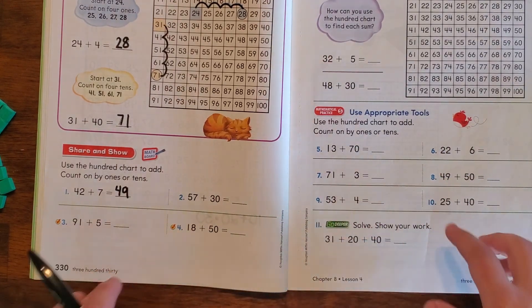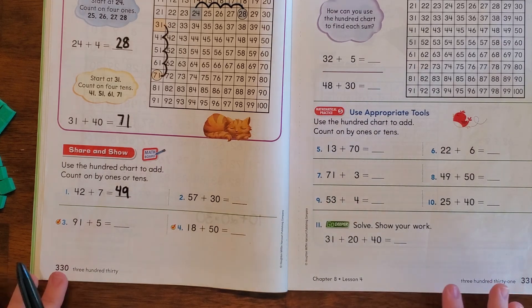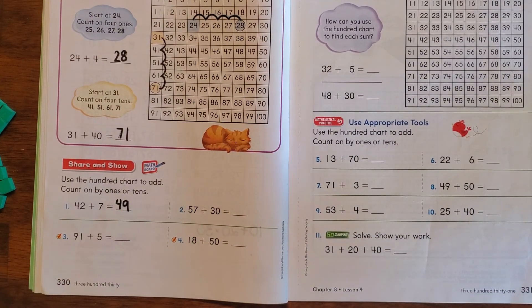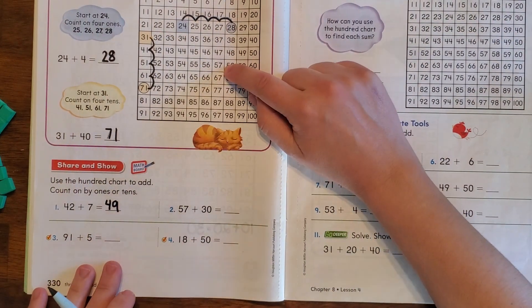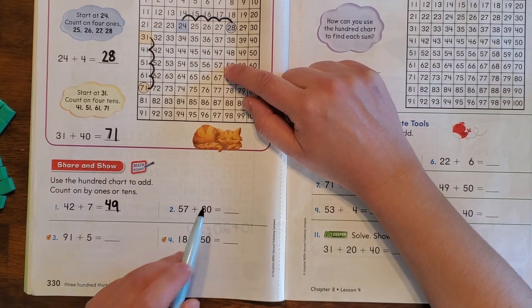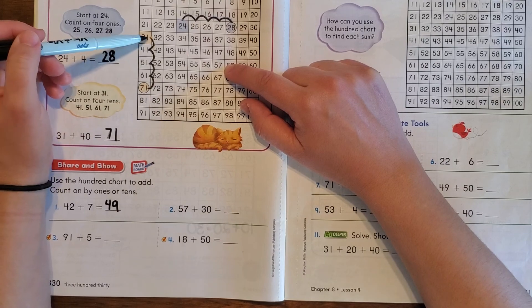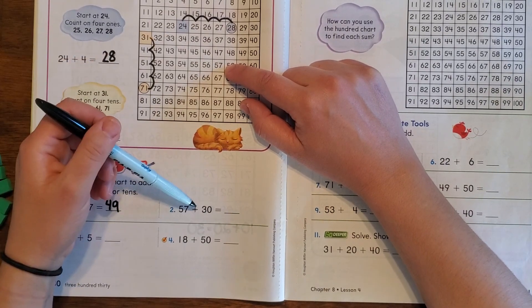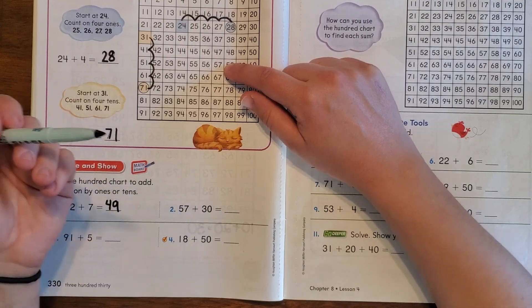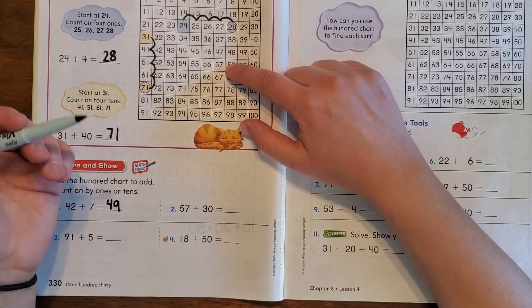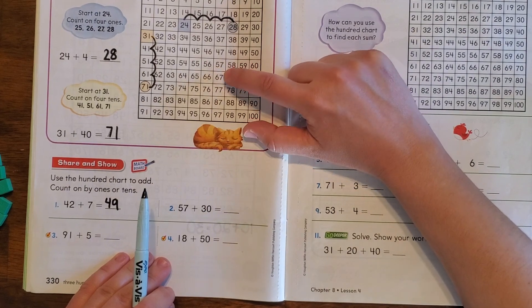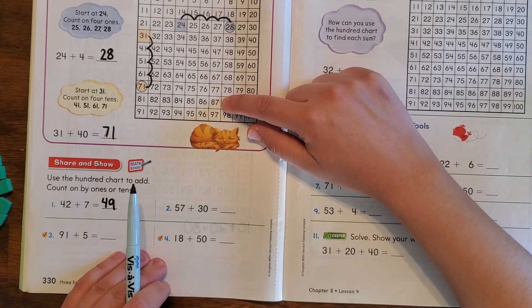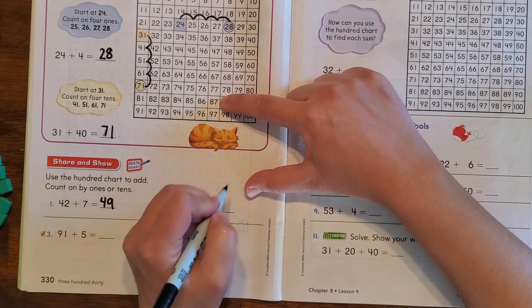So the next one, 57 plus 30 more. We can start here, find our 57 on the chart, and we know from here that if we go down one box, that's just like adding 10. So we want to add 30, which is 3 groups of 10 or 3 boxes down. So we'll start here at 57: 10, 20, 30. And where do we end up? 87, that's right.